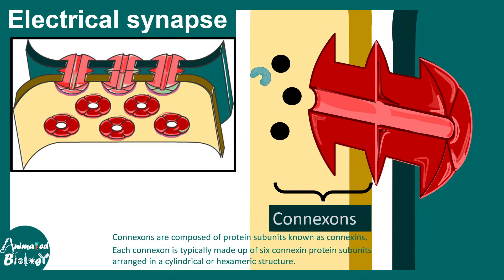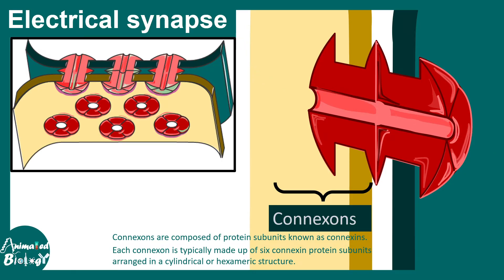If we cut through a cross section of this connexon channel, we can see this particular architecture. These channels allow the flow of ions, neurotransmitters, ATP, and also larger molecules through them. So not only do they allow transport of neurotransmitters, but also metabolites — that is super important. This means the presynaptic and postsynaptic cytoplasm are interrelated and connected internally.